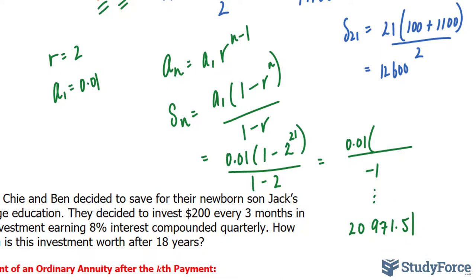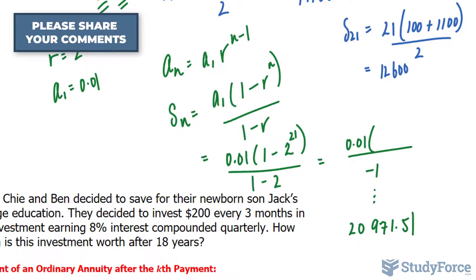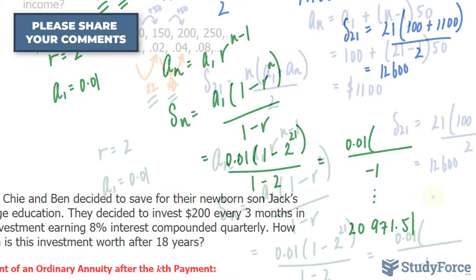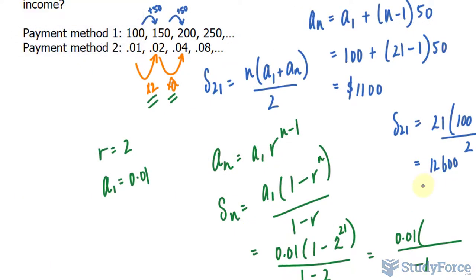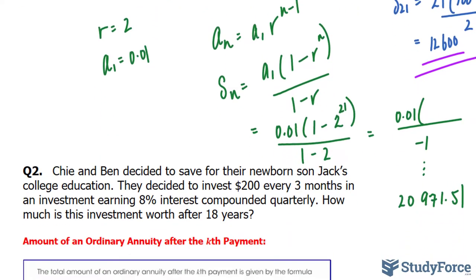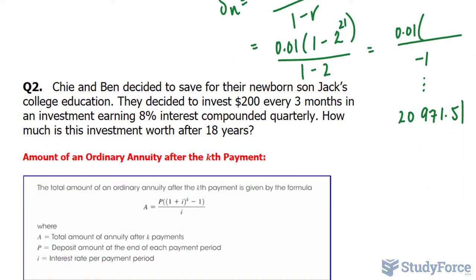So you decide: do you want to start working for one penny a day that doubles every day, or do you want to use payment method one and only end up with $12,600? Payment method two yields $20,971.51 — significantly more. That's the answer to question number one. If you'd like to see the answer to question number two, leave us a comment below. We've already written out the solution, and if you comment we'll gladly upload the video. We hope to hear from you soon.